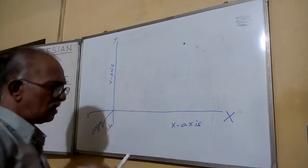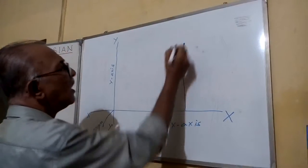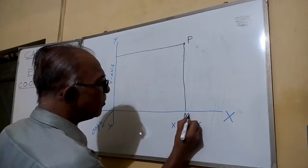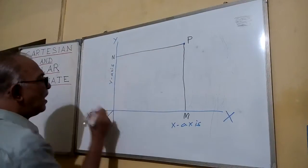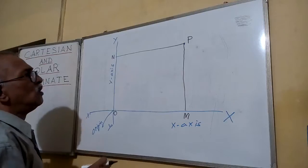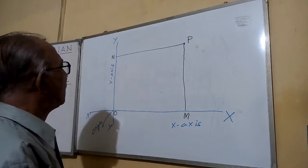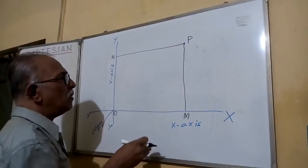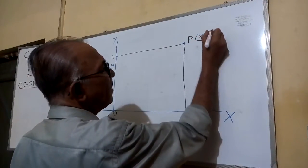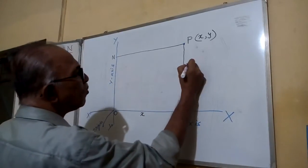Suppose a point is here. We can draw a perpendicular line here and another perpendicular line here. Let this point be T. We can then measure the distance along the x-axis and measure the distance along the y-axis. We can say T is at a distance measured along the x-axis and at a distance measured parallel to the y-axis, representing the coordinates x and y.